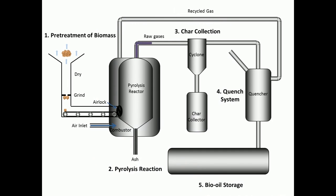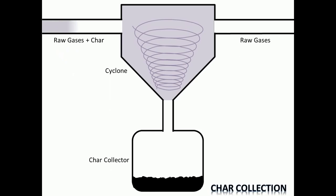The next step is char collection. In this step, the hot raw produced gases are introduced into a cyclone separator to remove char.